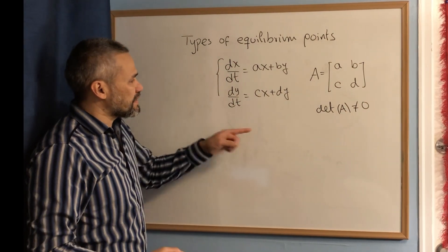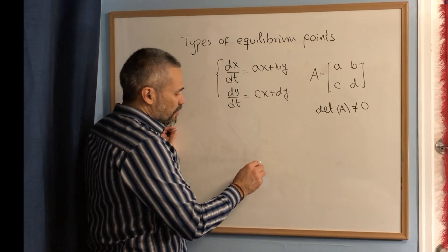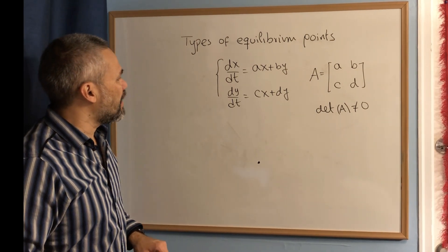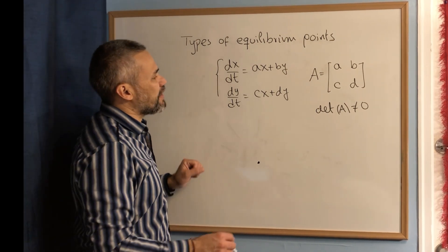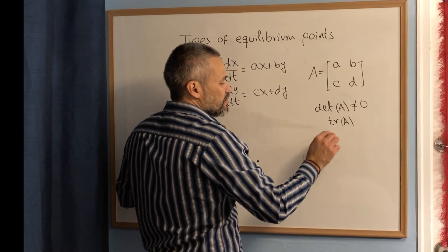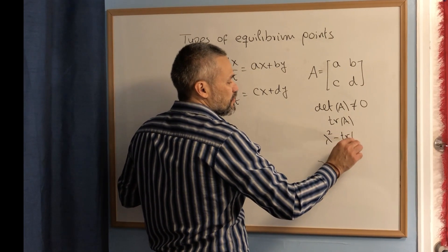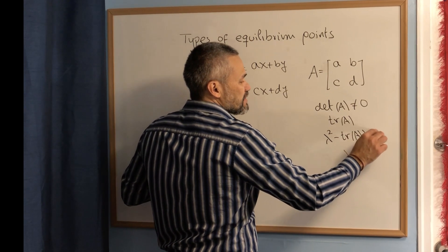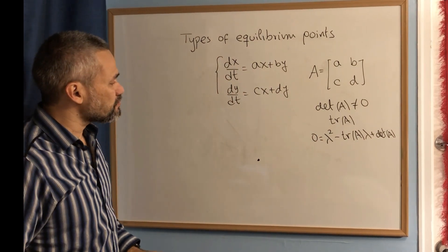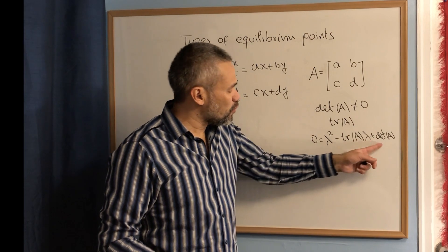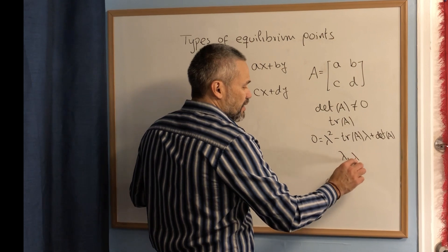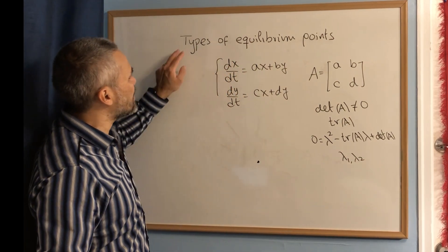Since the determinant of A is different from 0, the only equilibrium point is the point (0, 0). In order to decide what type of equilibrium point we have, we need to compute the trace of A so that we can compute the characteristic equation, which is lambda squared minus the trace of A times lambda plus the determinant of A equals 0. According to the solutions of this equation — called the eigenvalues lambda 1 and lambda 2 — we determine the type of equilibrium point.